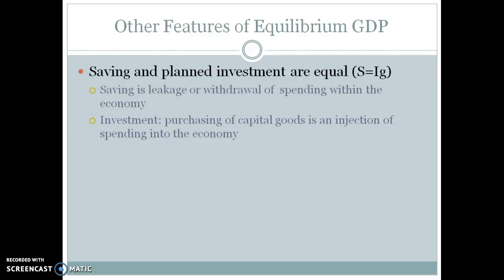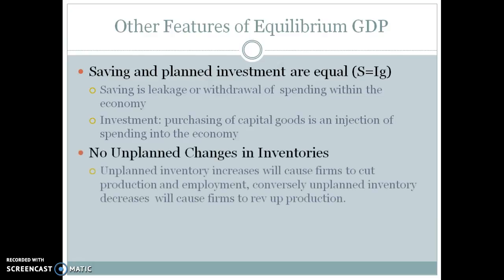Other features of equilibrium GDP: savings and planned investment are exactly equal. Savings are considered leakage from the economy — money that could have been consumed but is being held aside — while investment is an injection. At equilibrium, savings and investment must be equal. Investment is one of the least stable pieces of the expenditure approach formula, and inventories can fluctuate as well, but not at equilibrium GDP.